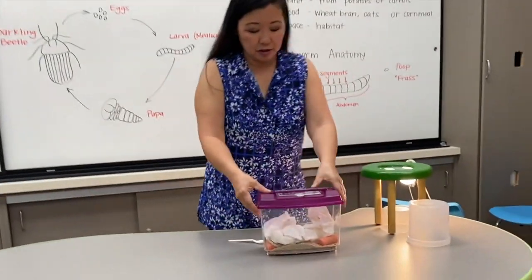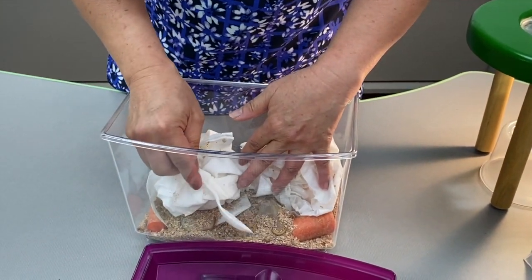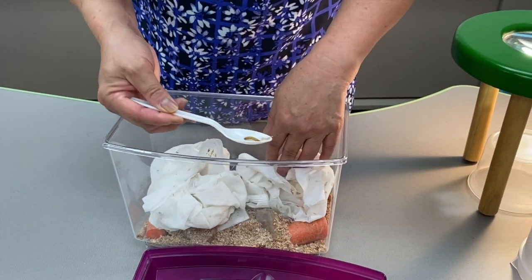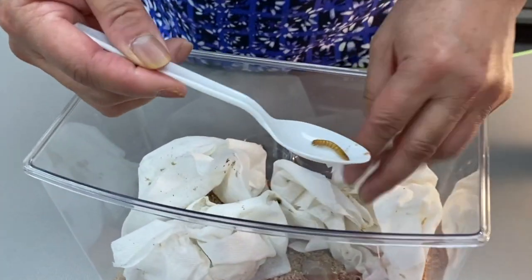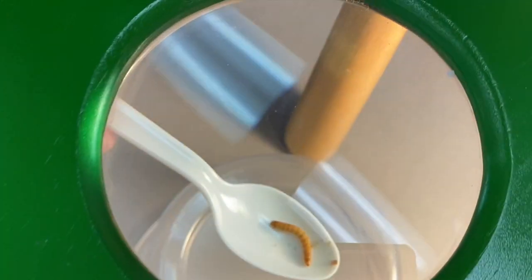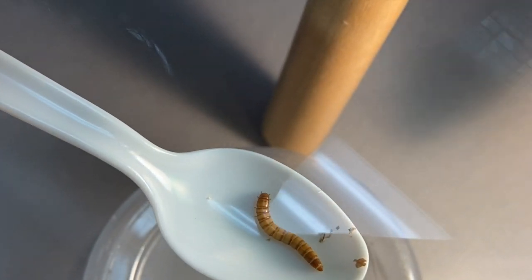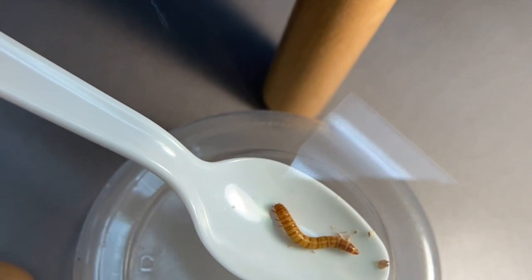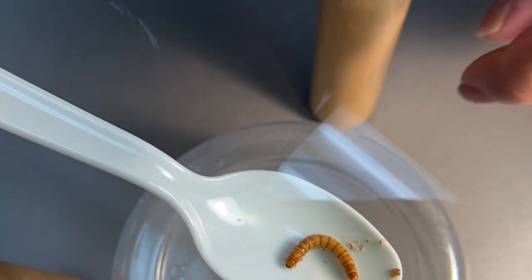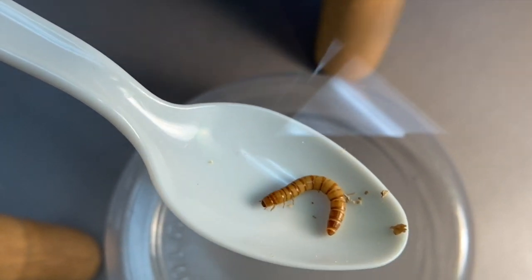Let's take some out so we could observe them. I have all the stages of mealworms in here. We have the larval stage — we can go ahead and look at it under the magnifying glass. This is the mealworm itself. You can see its segments, the head in the front, the legs, and the abdomen.